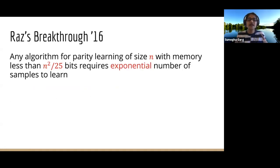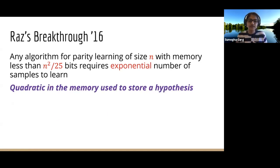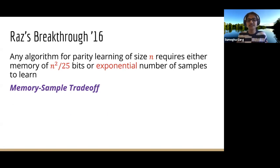In 2016, Ran had a breakthrough result which proved that any algorithm for parity learning of size n with memory less than n²/25 bits requires an exponential number of samples to learn, justifying the name given to this area of research: memory-sample trade-off.